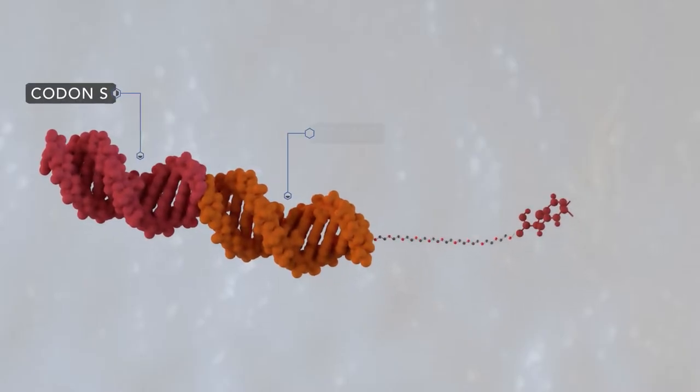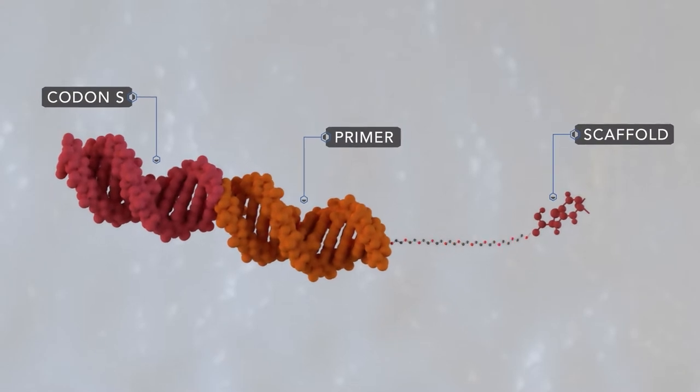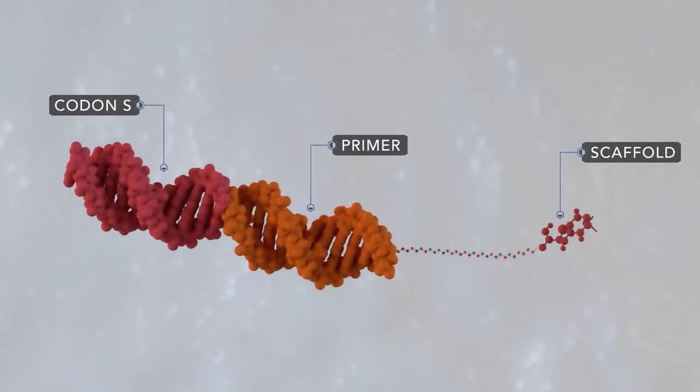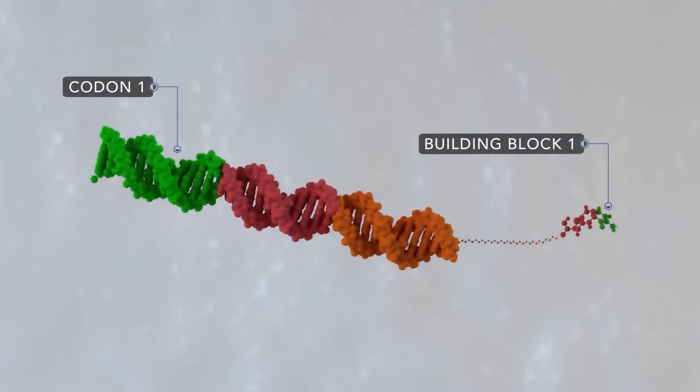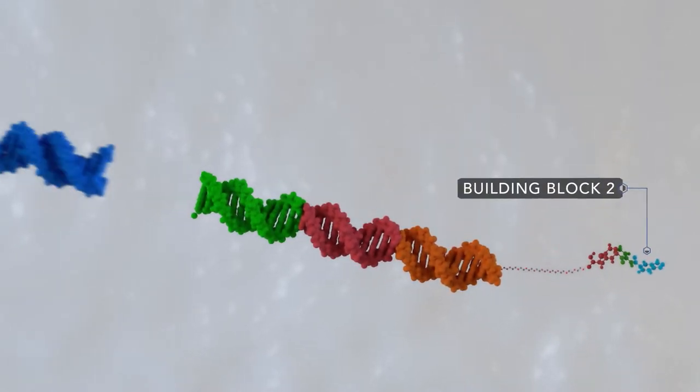To build a DNA encoded library, we begin with a scaffold as the basis for each compound. To this, a chemical building block is added sequentially, followed by a corresponding DNA tag.